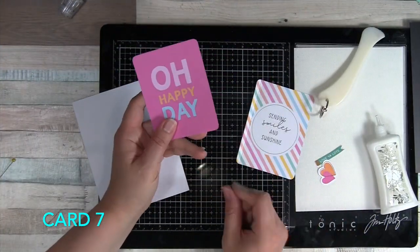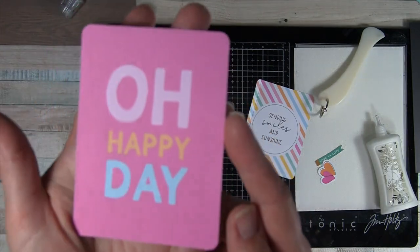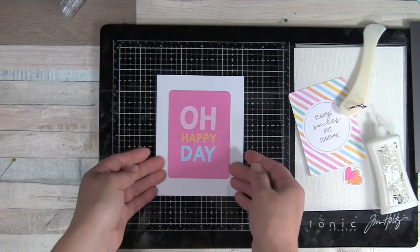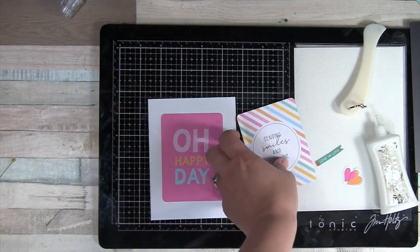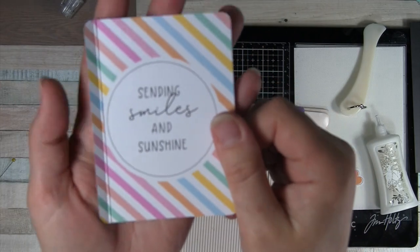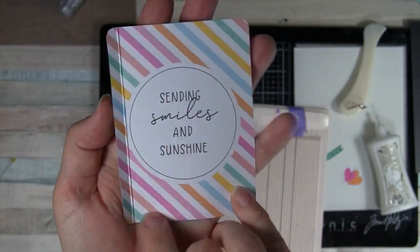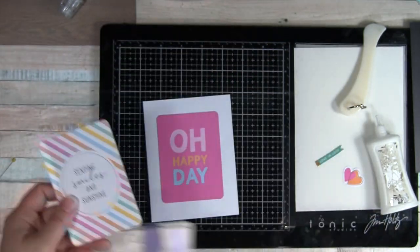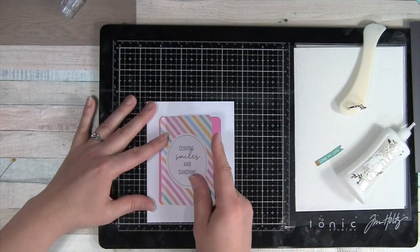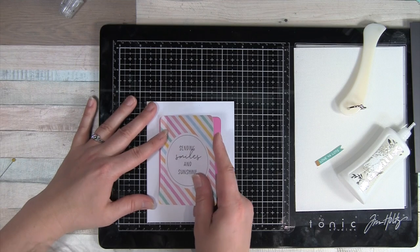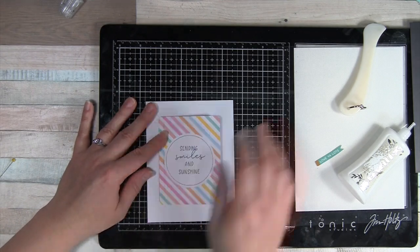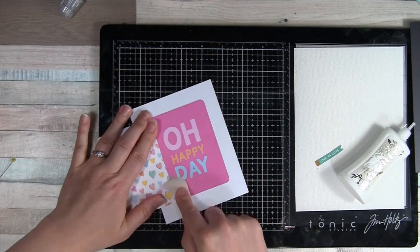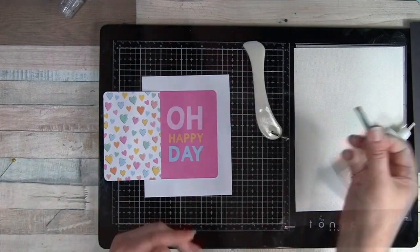So for card number seven, the journal cards are going to be interactive. We're going to take this Oh Happy Day and just center it down there on the card. Then the second journal card, Sending Smiles and Sunshine, I loved both sides. That's what inspired this card. I wanted to use both sides. So I've used my scoreboard to make a little quarter inch score there and use the double-sided tape and I'm going to place it down. So it's a nice flap that opens and closes and get it nice and secured there.